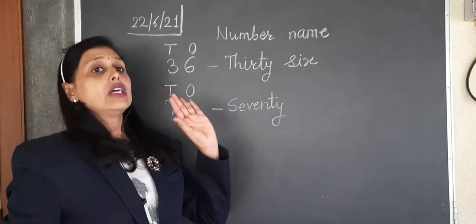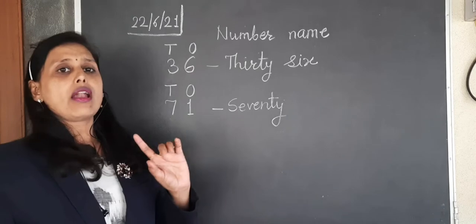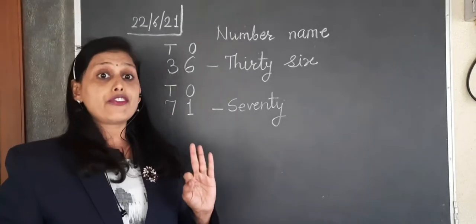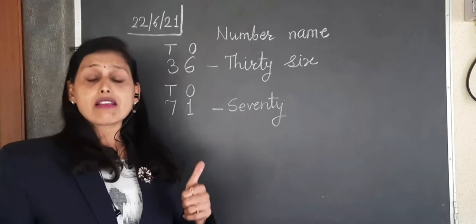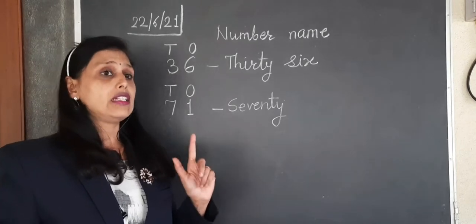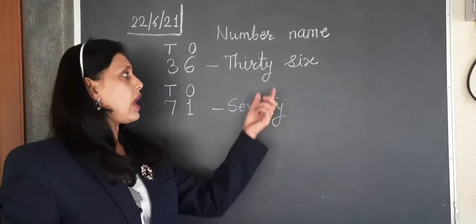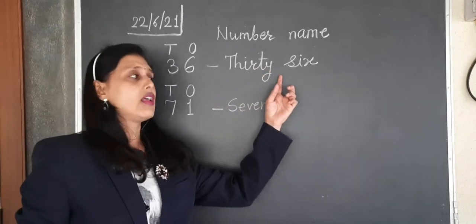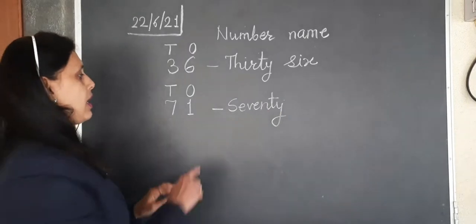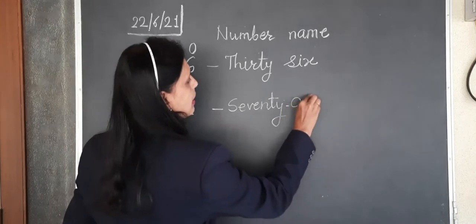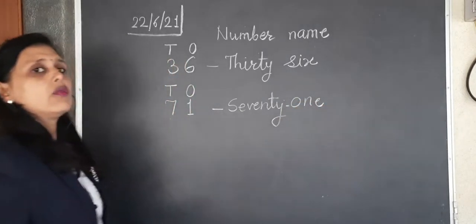Not for 20 and 100 now. Okay. 30, 40, 50, 60, 70, 80, 90. All these tens numbers are ending with T-Y. So like that way, 70, and number 1 is in the ones column, so we write it like seventy-one.